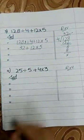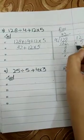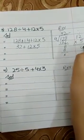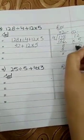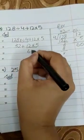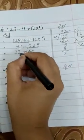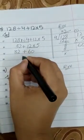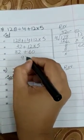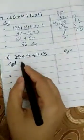Now we multiply: 12 × 5. 5 × 2 = 10, carry 1, 5 × 1 + 1 = 6, so 12 × 5 = 60. Now add: 32 + 60 = 92. And this is your answer.